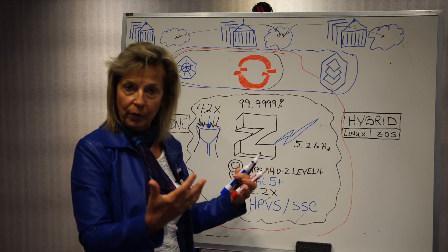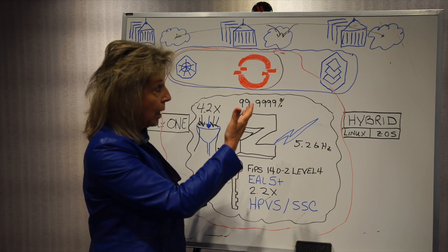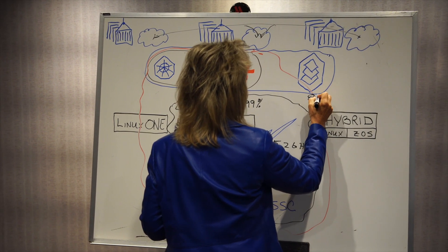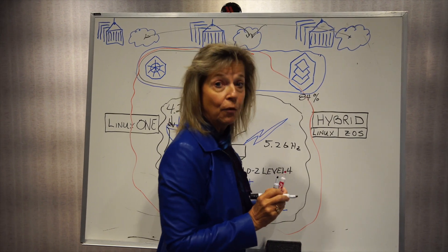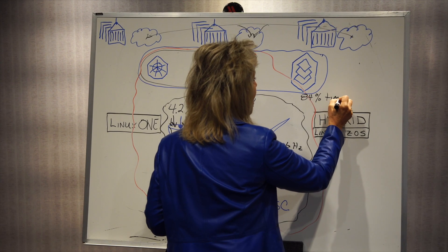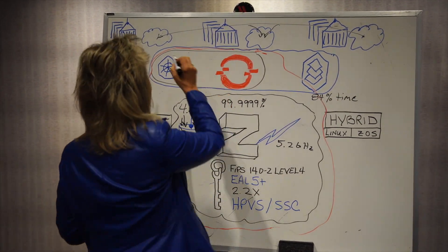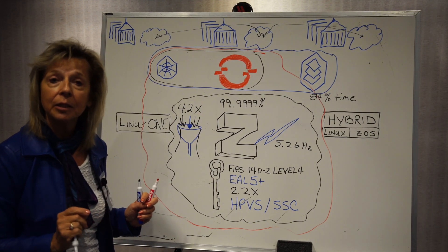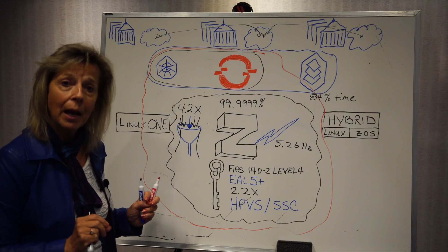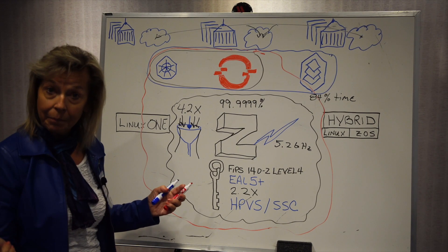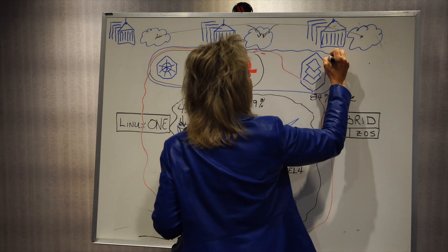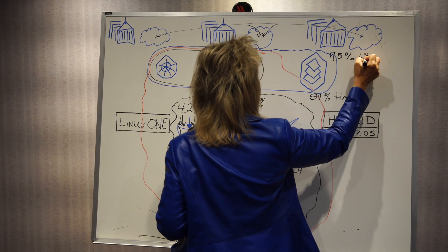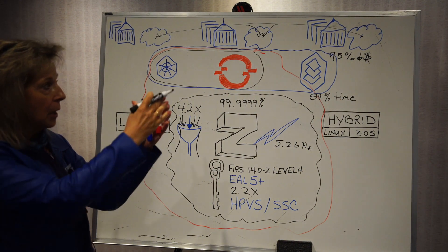Once you've implemented the Cloud Pack for your cloud environment, IBM is projecting an 84% savings in time for developers. Instead of developing and trying to integrate everything, they're simply deploying and testing their containers within the Cloud Pack implementation. This also means a projected 75% reduction in cost for operations of this cloud environment.